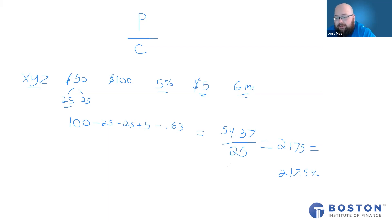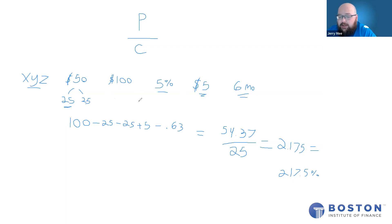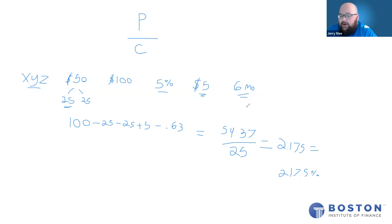I hope that clears up holding period return for you and shows that it is not that scary, especially the level zero and level one questions covering basic trades or a trade plus a dividend. It does get a little complicated when you throw margin into the mix, especially if it's only a partial year like six months or three months. Just calculate the annual margin rate and divide it by your timeframe to get the amount you'll actually pay in margin. Hope that clears things up — feel free to reach out if you have more questions on this, and good luck studying.